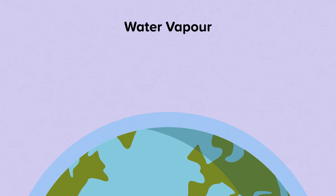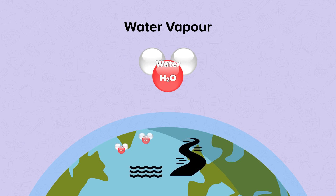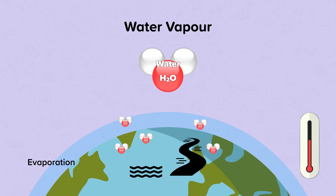Water vapour is made up of one oxygen atom and two hydrogen atoms. It is produced naturally when water from seas, oceans and rivers evaporates. As the temperature of the earth increases, more water is evaporating, meaning more water vapour is collecting in the atmosphere.